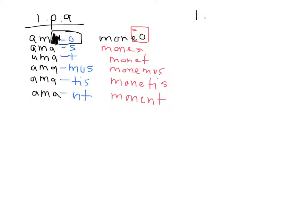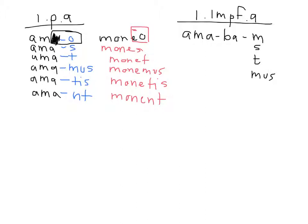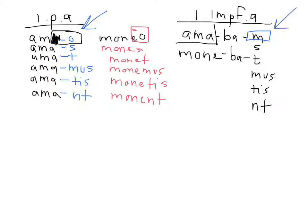The next tense you learned is the indicative imperfect active. Similar process: take the second principal part, drop the -re, add the sign of the imperfect — which is -ba — and then instead of adding an -o for the first person singular, you add an -m. The rest of it uses the same endings as the present. For the imperfect, the first person singular is always -m, whereas for the present it's always -o.